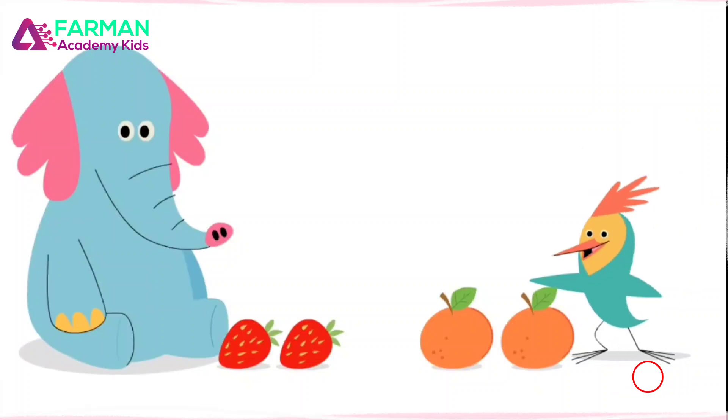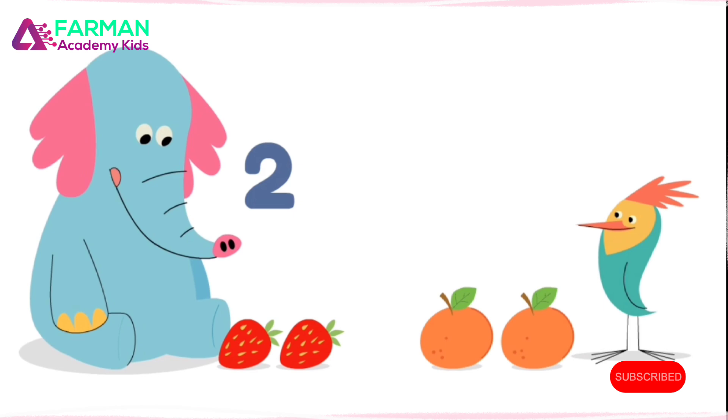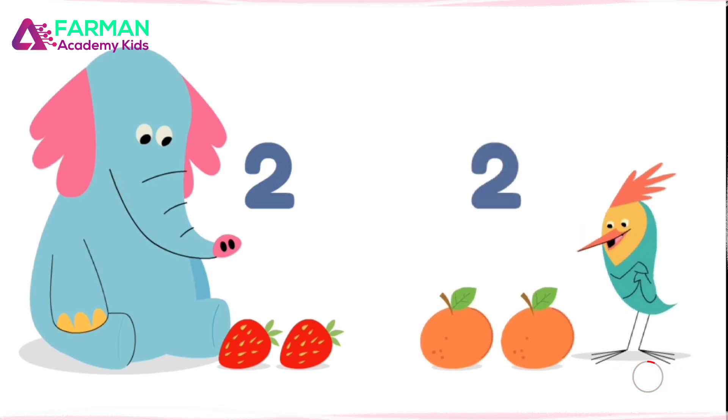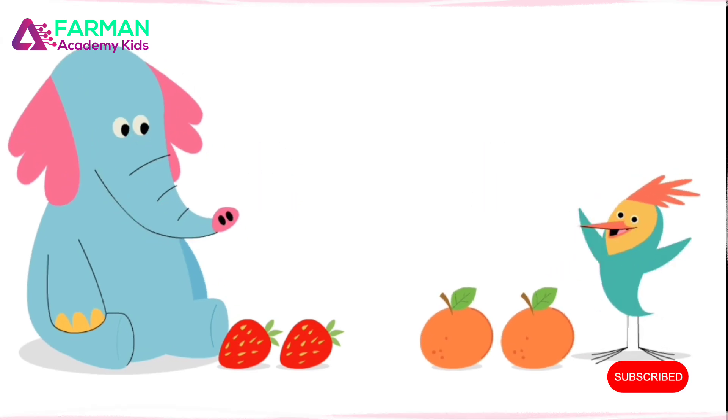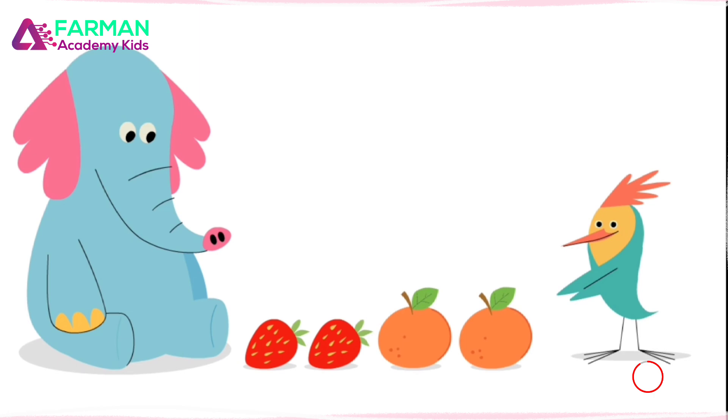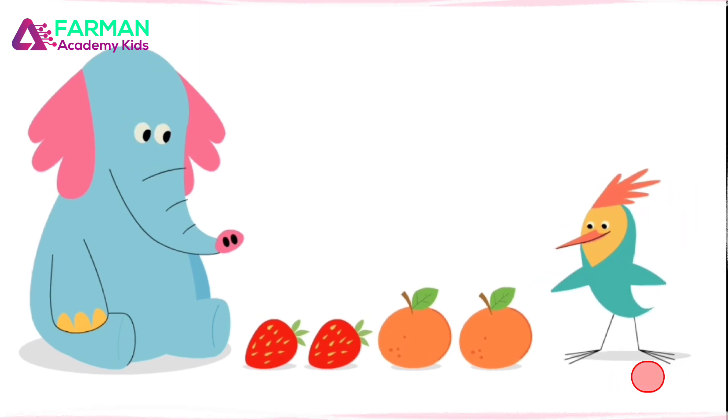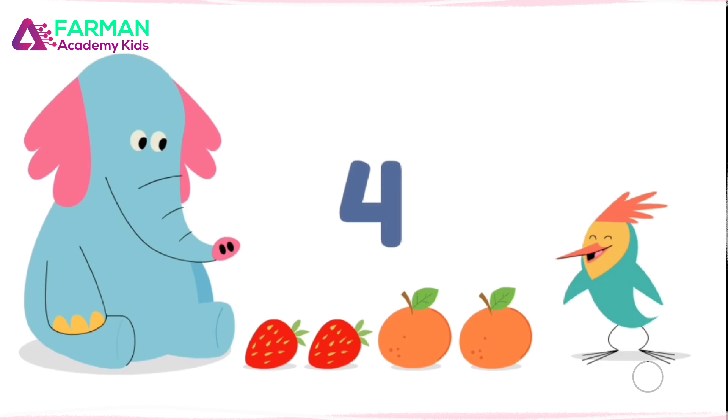We both have fruit. Ullo has two strawberries. I have two oranges. How many fruits do we have together? One, two, three, four. We have four fruits together.